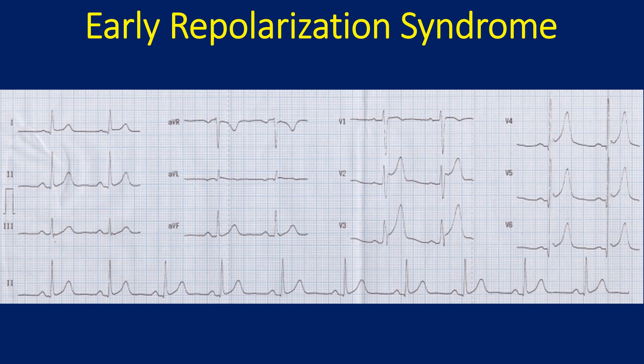Another ECG showing early repolarization syndrome, evidenced by the concave upwards ST segment elevation in leads V2 to V6. A closely similar pattern can occur in the hyperacute phase of myocardial infarction. Moreover, persons with ERP syndrome can also develop myocardial infarction. So, if the clinical history is suggestive of ischemic cardiac pain, it is better to have follow-up with serial ECGs and troponin estimations.